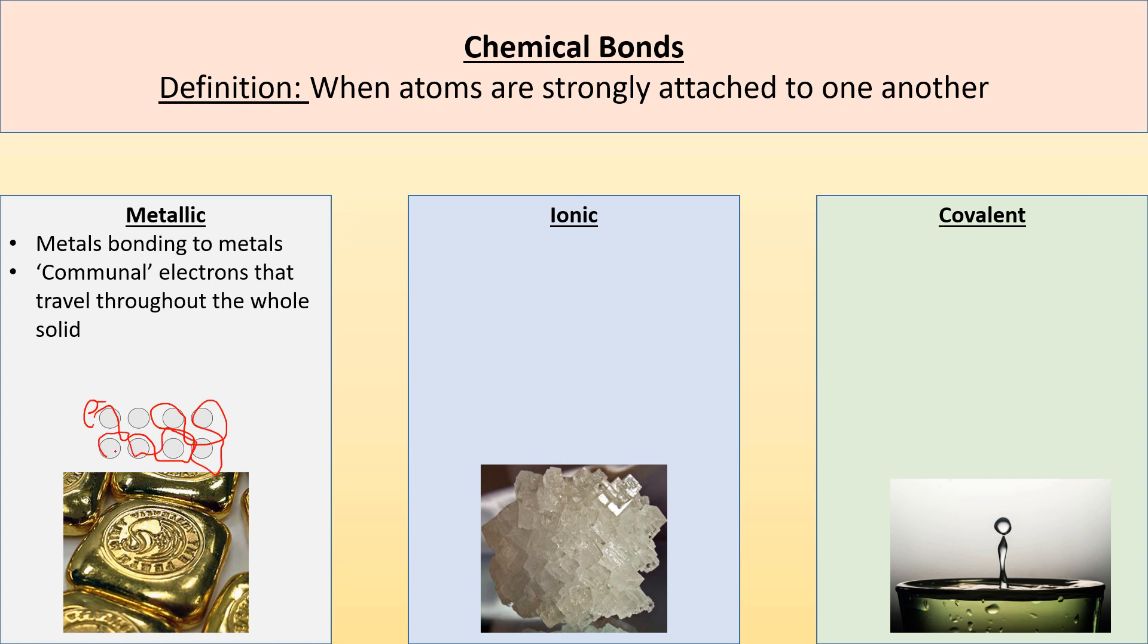And all of those atoms are sharing their valence electrons with every other atom. So you end up getting these shared mobile electrons, which is also why metals are highly conductive and have luster. It's those mobile electrons that allow them to conduct electricity.